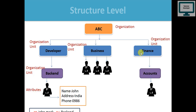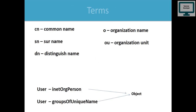In LDAP we use specific short-code terms. CN means Common Name, SN means Surname, DN means Distinguished Name, O means Organization name, OU means Organization Unit. A DN (Distinguished Name) can represent an organization, person, or group with a unique name.